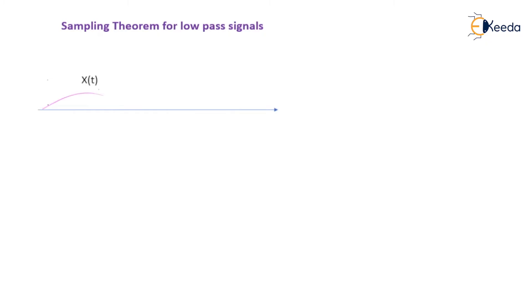Here, if we consider the information signal x(t), it is also called the continuous time signal. Another signal is nothing but the impulse samples that are taken. We can say that it is a unit impulse train signal.